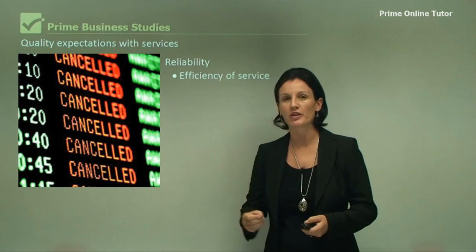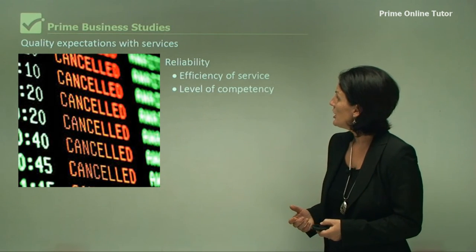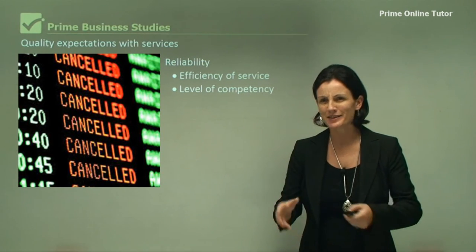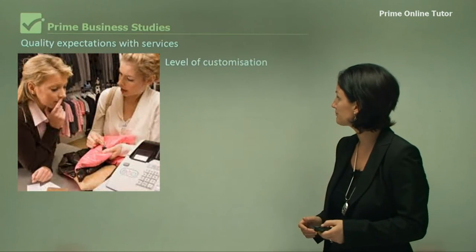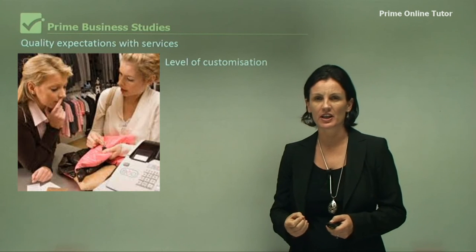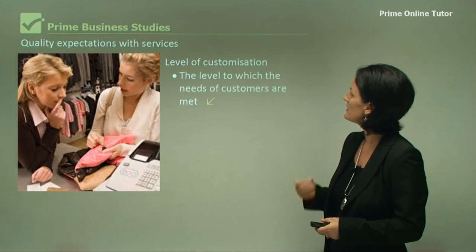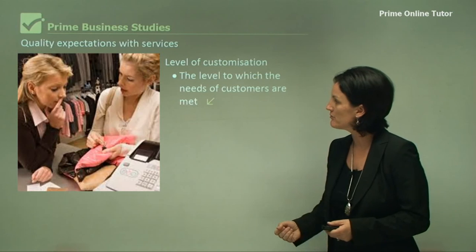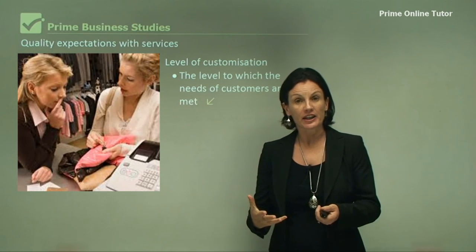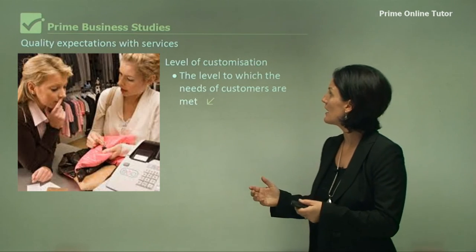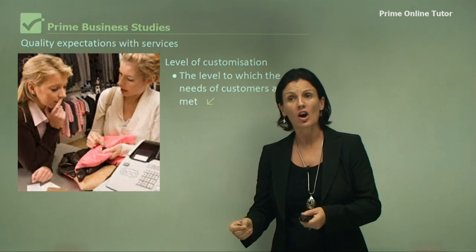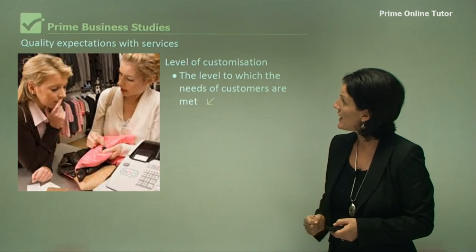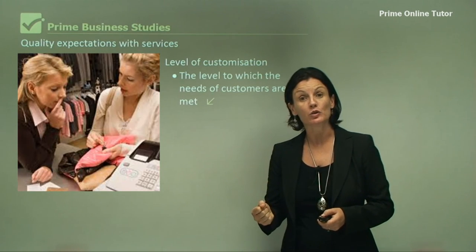If a flight is delayed for an hour, that's not a very efficient service in our minds. We expect that services are competent — if I go and have my hair cut by a hairdresser, I'm expecting that they are competent in cutting my hair. We also expect a level of customisation, meaning the needs of the customer are met. For example, if I buy a garment from a clothing shop and get home and find it's damaged, I expect to be able to go back and have the shop assistant deal with that issue. So that ends our lesson on quality as an influence on operations management.